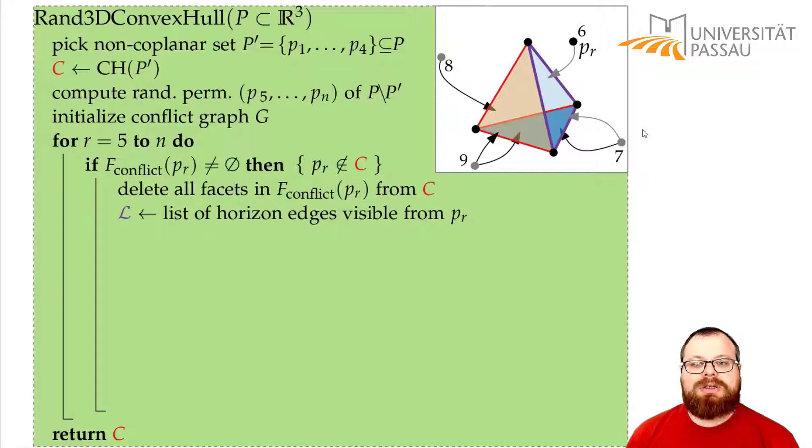So now we want to look at the horizon edges that are on the visibility of this point. To get these horizon edges, we can just walk through all the faces in the conflict graph, and they have to be on the boundary of those faces. So just walking through all those faces, we can construct the horizon again, which doesn't take longer than looking at the faces themselves.